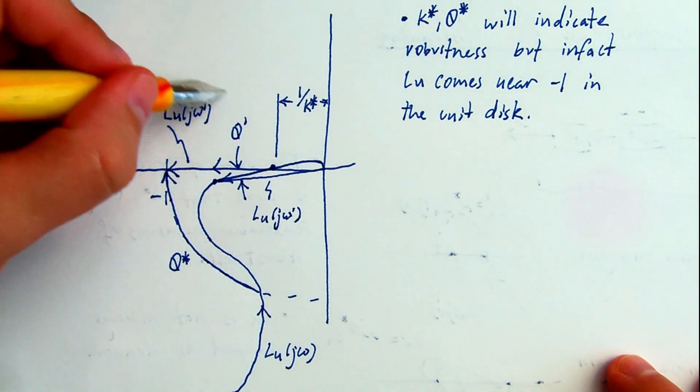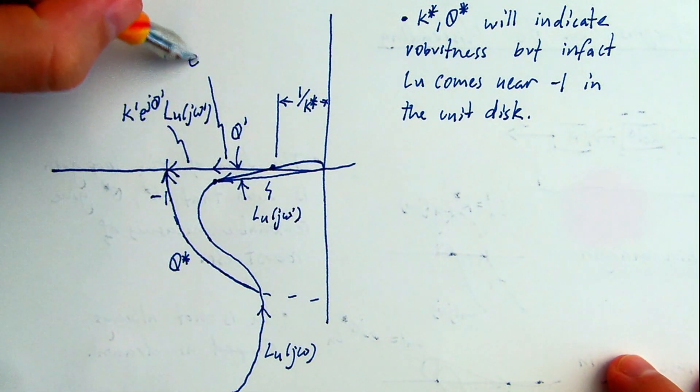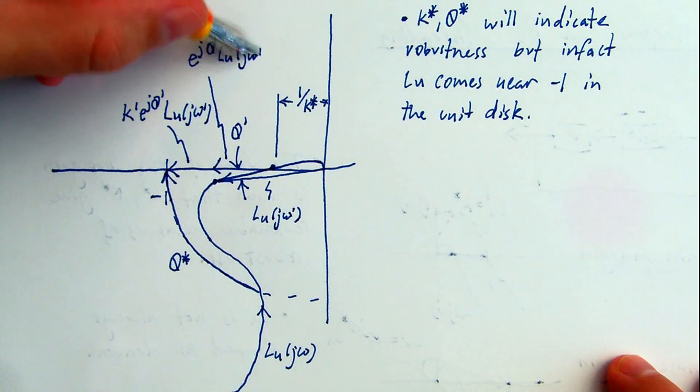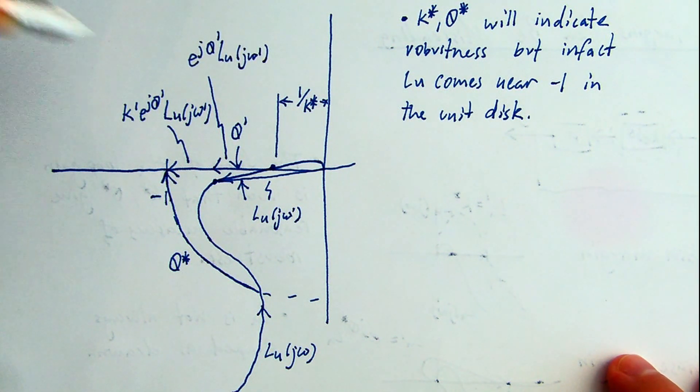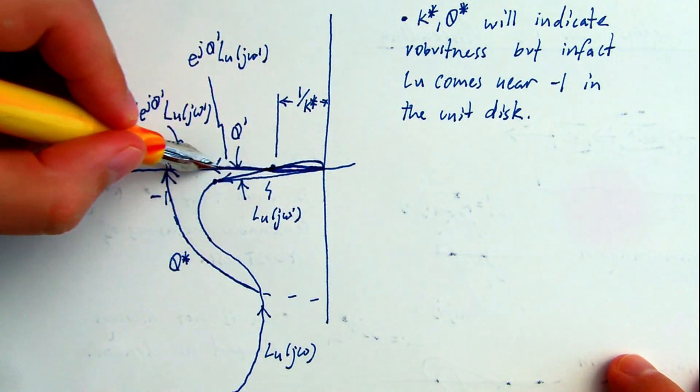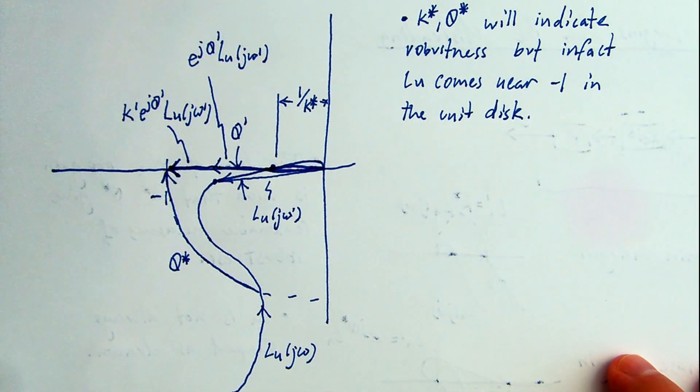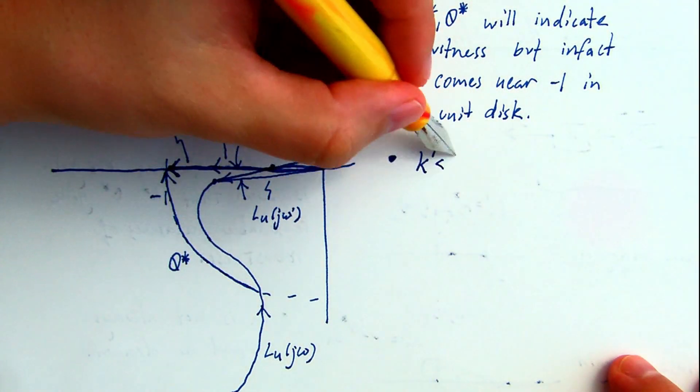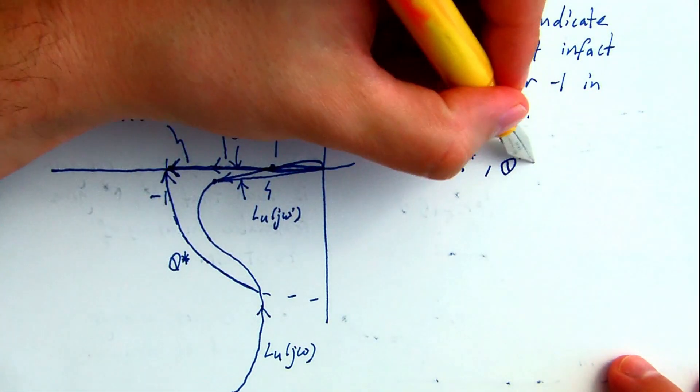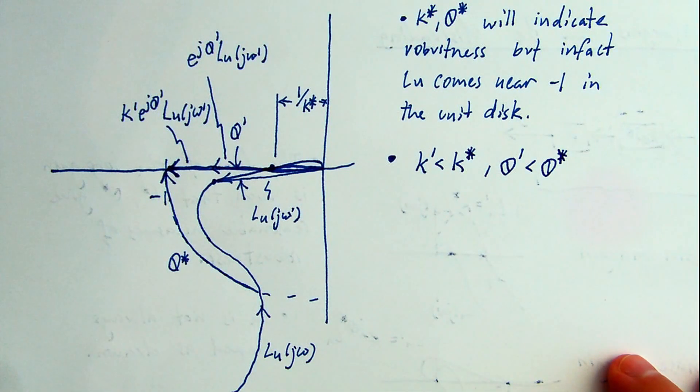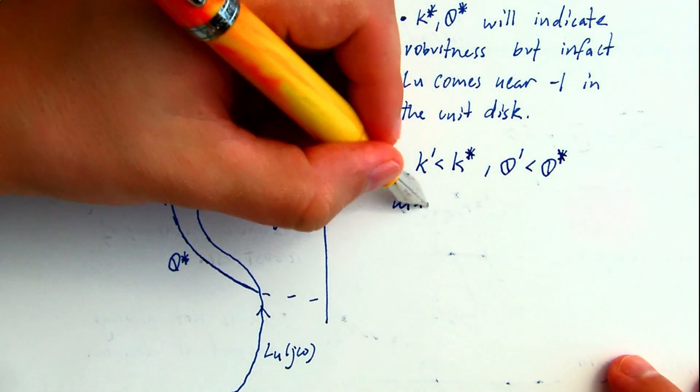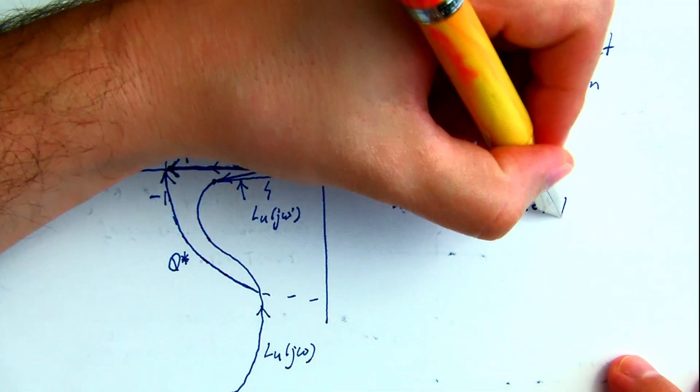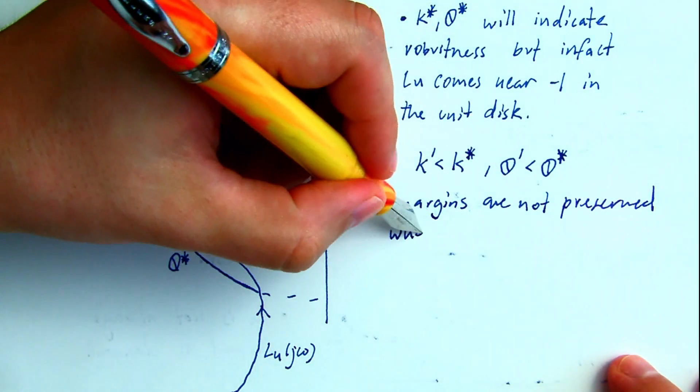Where we started with the loop gain and then rotated it to the real axis and then scaled that phasor finally by a value k prime. We caused instability here with the gain and the phase well below the gain and phase margins.